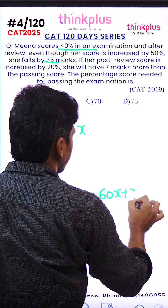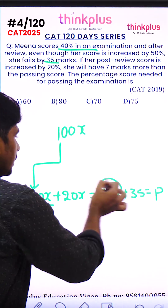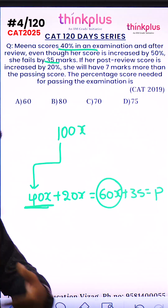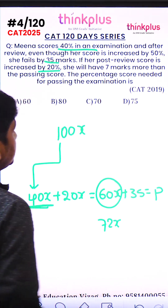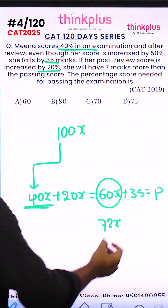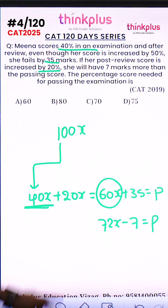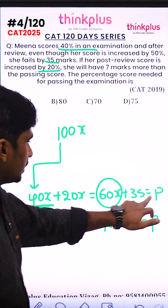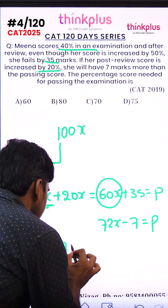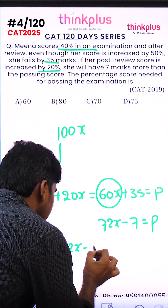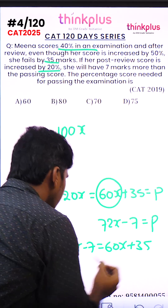35 marks are added, so the pass mark becomes 60x + 35. It is given that 72x is the pass mark condition, and 72x minus 7 is also a pass mark. So 72x minus 7 is equal to 60x plus 35.